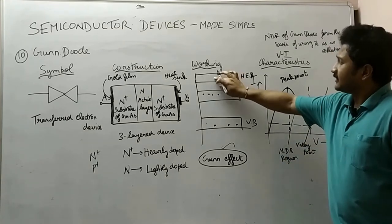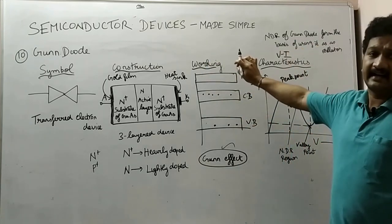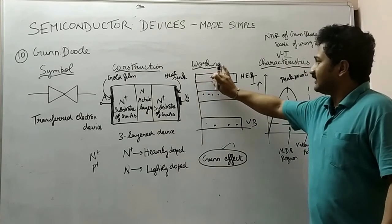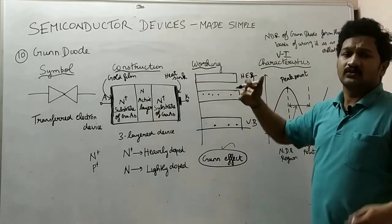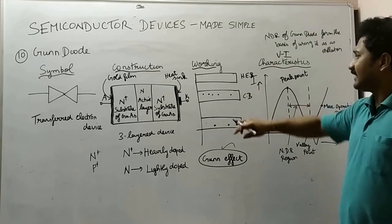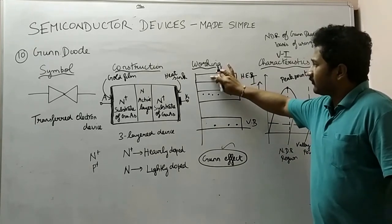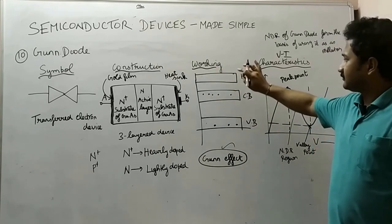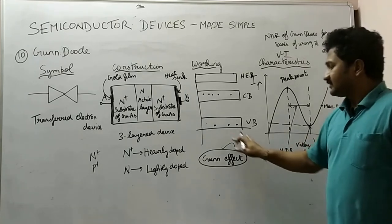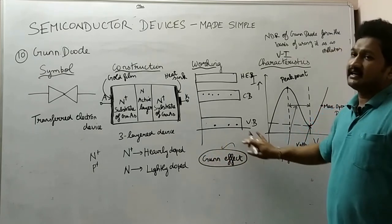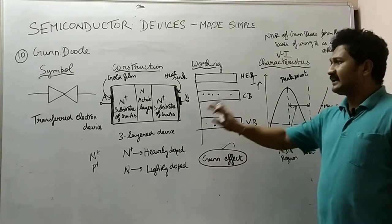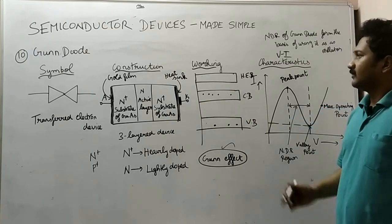In the Gunn effect, when the voltage was increased and the electrons were in the higher energy band, since the electrons are immobile in that region there was no improvement in current — only a decrease. After that, electrons moved from the higher energy band back to the conduction band, and then the current started increasing. This decrease in current when the external voltage increases is called the Gunn effect.